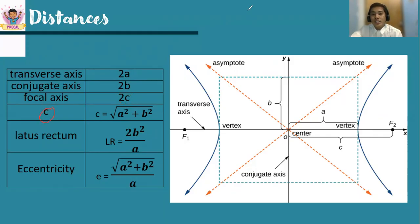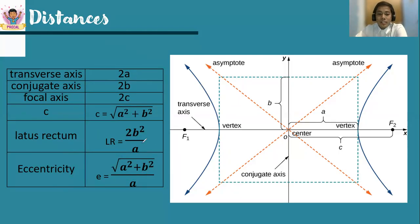To compute for the c distance, we use a formula just like the Pythagorean theorem: c equals the square root of a-squared plus b-squared. For the length of the latus rectum, we use the formula 2b-squared over a. For the eccentricity, it is still c divided by a, but since c is greater than a, the eccentricity of hyperbolas is always greater than 1.